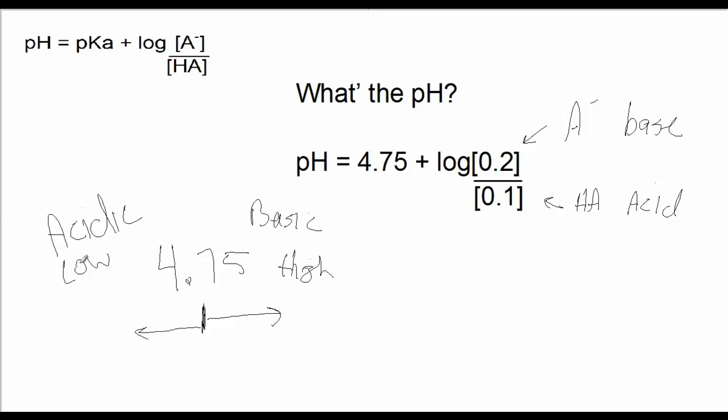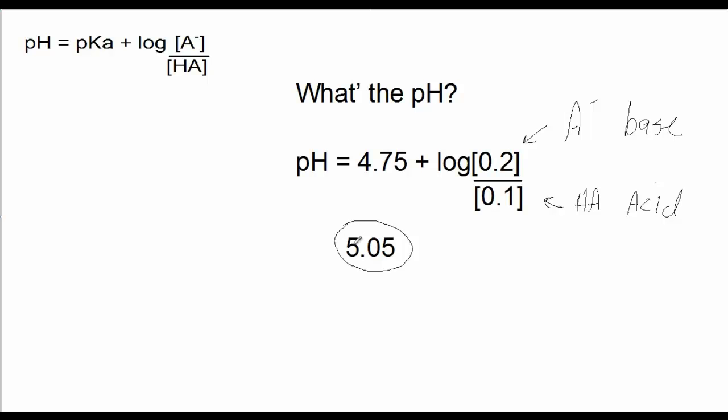I'm going to erase this, but give that a thought. Well, if you predict greater, you're correct. Because it works out that the pH is 5.05. I encourage you to plug these numbers in this fraction and work out the log. And verify, in fact, that the pH is going to be higher and will be 5.05.